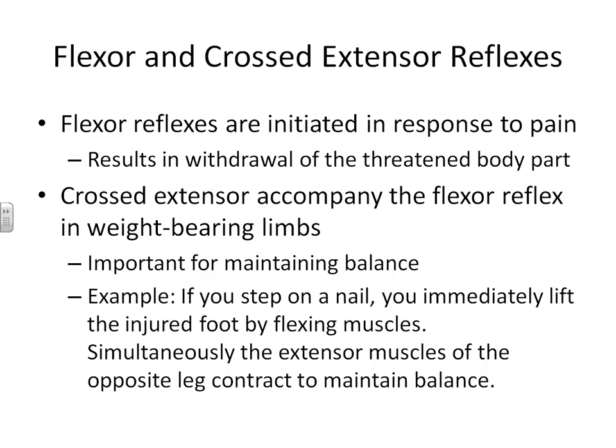The cross extensor reflex sometimes accompanies a flexor reflex when the flexor reflex occurs on a weight-bearing limb. For example, if you stepped on a nail with your left leg, the flexor reflex would cause the hamstrings and other muscles to contract to get your left leg off the nail. If only the flexor reflex occurred and the opposite side wasn't compensated, you would fall down. So simultaneously, the opposite limb extends its muscles to help you maintain balance and not fall over.